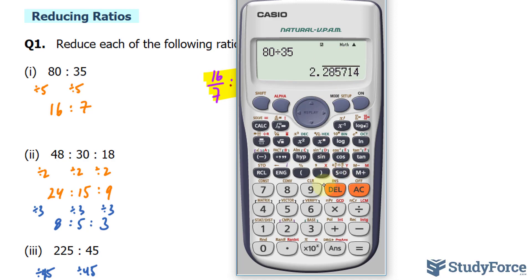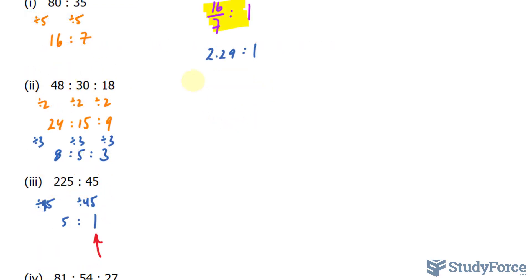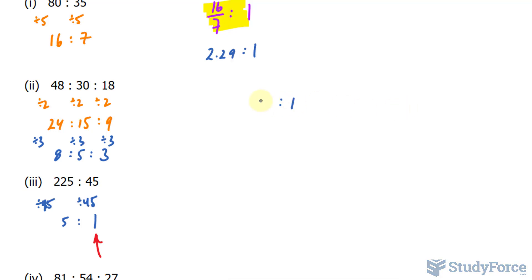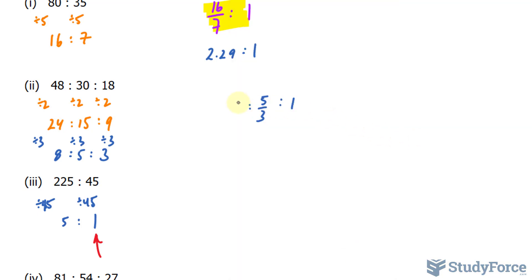As I mentioned, you can write this as a decimal if you like. So you can write it as 2.29 rounded to the nearest hundredths, 2.29 to 1, but of course, this one is more accurate. The smallest number in this group is 18. So I'll divide 48 by 18, 30 by 18, and 18 by 18. This one is easy. It's a 1, 30 divided by 18 gives us 5 over 3, or 1.6 repeating. I'll write down 5 over 3, and 48 by 18 gives us 8 over 3. Now, by all means, you can convert these into decimals, but it ultimately depends on what your teacher wants.